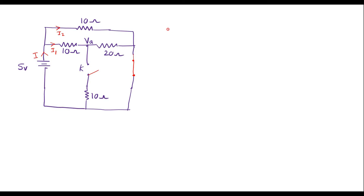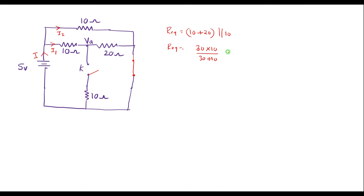Let me find the equivalent resistance. R_equivalent equals: the 10 and 20 ohm resistors are in series, giving 10 plus 20 equals 30. That combination is in parallel with 10 ohm, so R_equivalent equals 30 times 10 divided by 30 plus 10, which is 300 divided by 40.